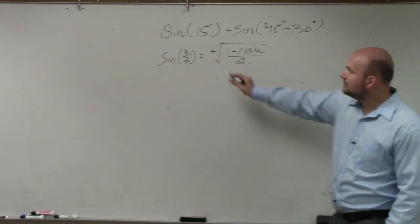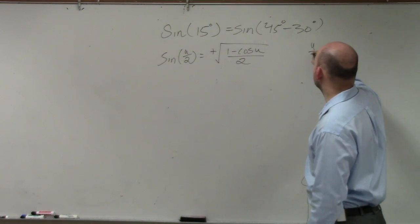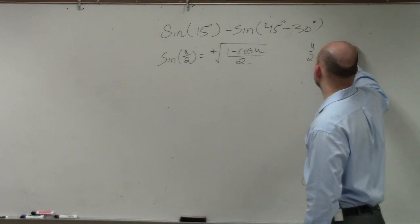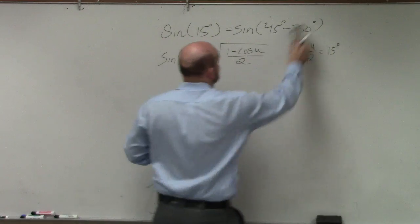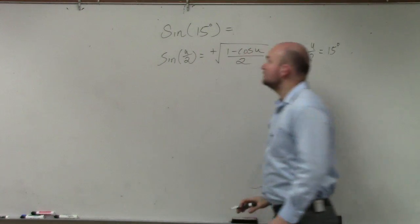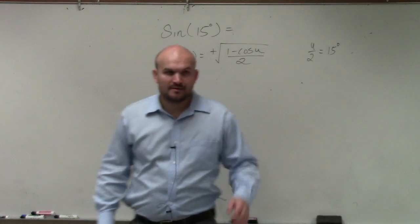Now, in the next thing, u over 2 is equal to, so we could say u over 2 is equal to 15 degrees. Would everybody agree with me? See how these are like, we don't need to use this. Do you guys agree with me? u over 2 is equal to 15 degrees. Yes? Could we solve for u?